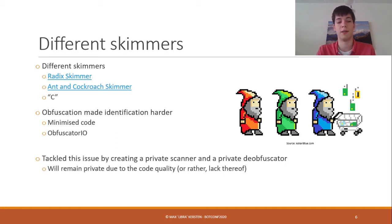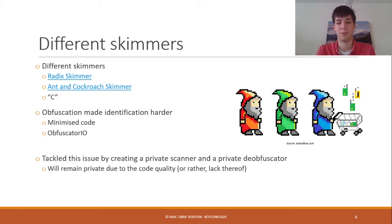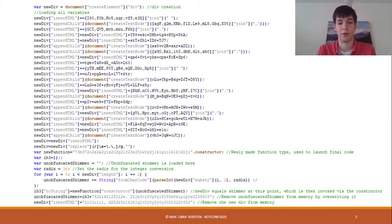One of the bigger problems is the obfuscation of JavaScript. It's a really versatile language, and minimized code is also seen in many legitimate places. Additionally, there's an open source obfuscator called obfuscator.io, which is also used by legitimate applications — so even scanning what's out there makes it really difficult to find which parts are used by criminal actors versus legitimate ones. Sometimes they add their code to legitimate libraries, sometimes they keep it as-is. I tackle this by creating a private scanner and deobfuscator for some of the JavaScript I encountered, which will remain private due to lack of code quality — but feel free to message me personally.